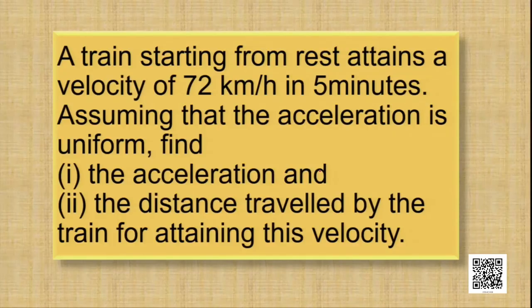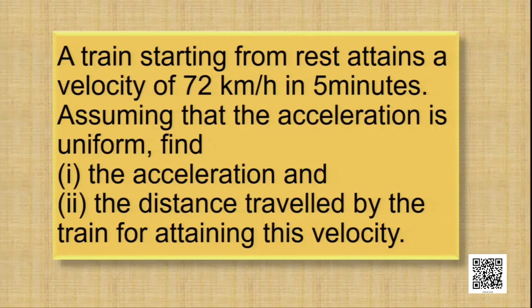The first question: a train starting from rest attains a velocity of 72 km per hour in 5 minutes. Assuming the acceleration is uniform, find the acceleration and the distance traveled by the train. What is given: final velocity is 72 km/h, time duration is 5 minutes. We need to find the acceleration using V equals U plus AT, since the initial velocity is zero.